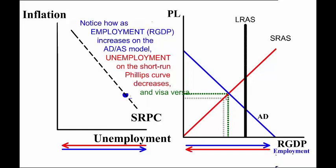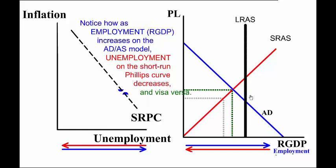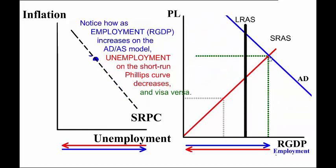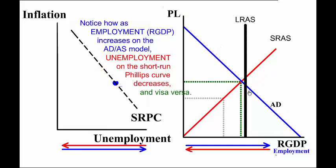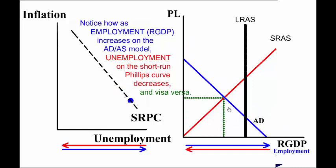As aggregate demand increases, the quantity supplied in the Short Run increases and you go from one point to another point on the SRAS, just like on its mirror image — the Short Run Phillips Curve — where you move from one point to a higher point. As aggregate demand decreases, you go from one point on the Short Run Aggregate Supply Curve to another, and similarly from one point on the Short Run Phillips Curve to another.